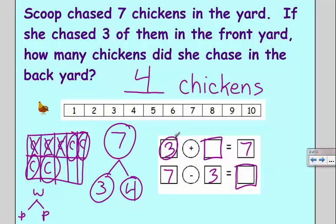I'm going to circle three, four, five, six, seven, meaning it took one, two, three, four jumps to make it there. So, four must be my missing addend.